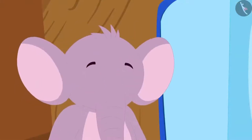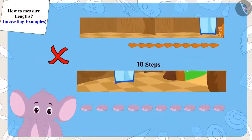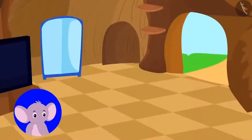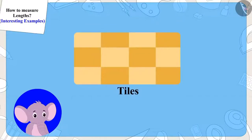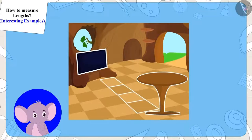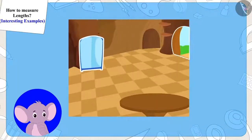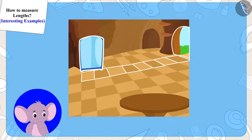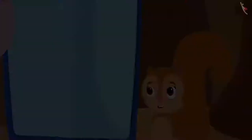Appu understood Chanda's mistake. Appu said to Chanda that whenever she has to tell somebody the distance from one place to another, she can use the count of the tiles on the floor. Like, her TV is four tiles away from the table, and her blue cupboard is eight tiles away from the door. Chanda understood what Appu was saying. Children, you can also measure the distance between two places by using the lengths of objects like a long stick, tile, or a rope.